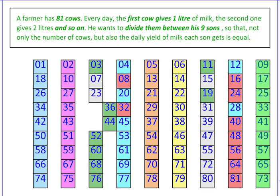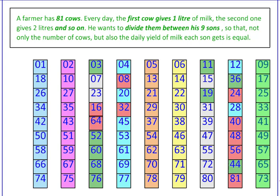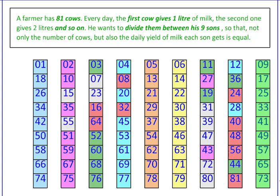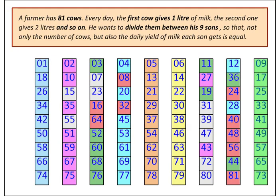There are pairs summing to 80 that can be swapped, and pairs summing to 70 as well. After these swaps, new combinations become possible, so the total number of solutions must be very large. We have established there are multiple solutions, but those swaps were somewhat random. A more geometric and systematic approach to finding dozens more solutions will be covered in part 2.